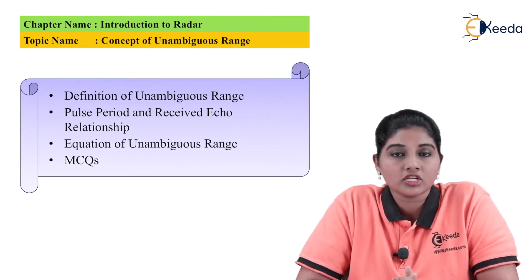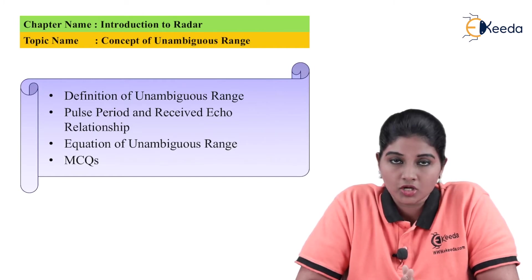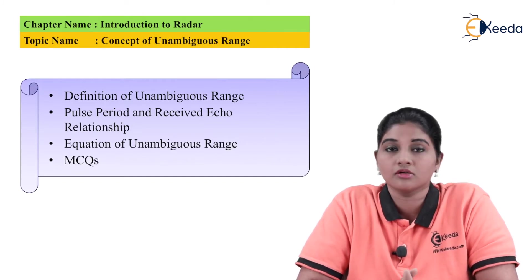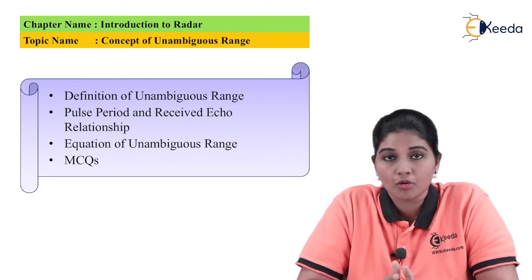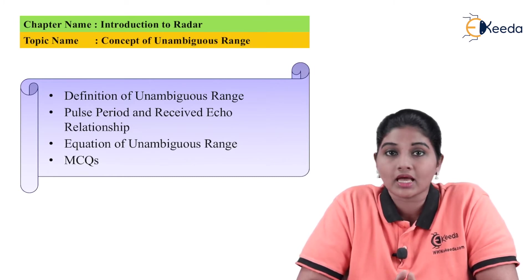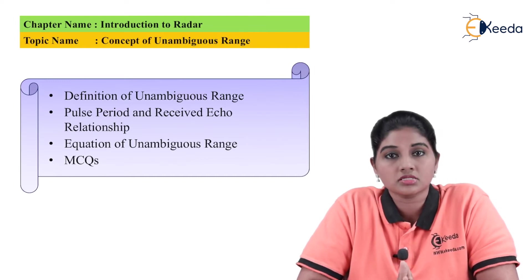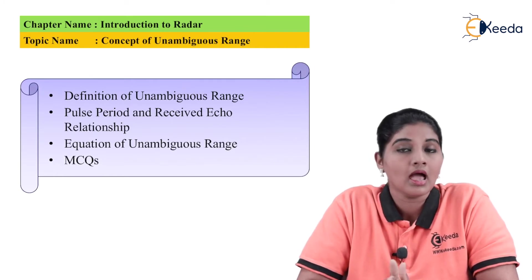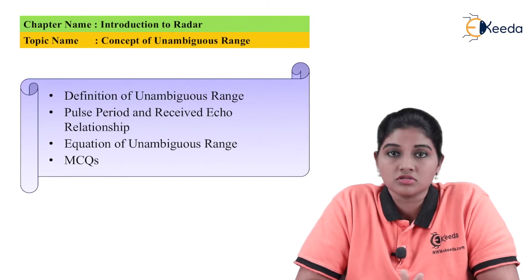Radar stands for Radio Detection And Ranging equipment. In the case of the simple radar equation, it provides information about two things: the two-way propagation distance, and the overall time period taken — that is, the time taken by the signal to travel from transmitter to target and back from target to the receiver.